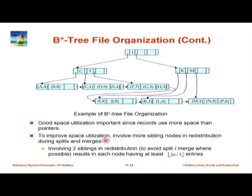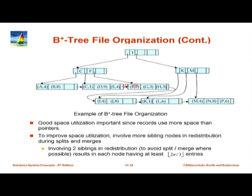We did not care much about space utilization before — half full is fine because the index is pretty small. If data is 100 bytes, the index may require only 10–12 bytes, so the overhead is around 5–10 percent at half full, and B+ trees tend to be closer to two-thirds full. But if we are storing big records in the leaf and it is only half full, we may be wasting half the space of the file, which can be very large if there are many records.